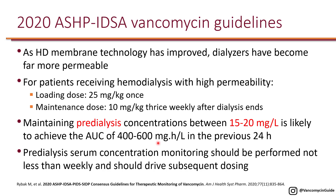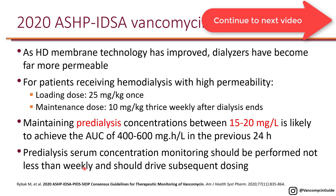If the pre-dialysis level — obtained right before hemodialysis — is 15 to 20, it is very likely to achieve an AUC of 400 to 600 in the previous 24 hours. These dosing recommendations are just to start things off, and at minimum the weekly vancomycin pre-dialysis level should be driving the subsequent dosing of vancomycin.